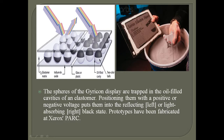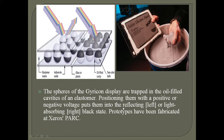In the diagram, we have the elastomer matrix, indium tin oxide, glass or plastic substrate, oil-filled cavities, and two-color black-and-white balls. The spheres of the Gyricon display are trapped in oil-filled cavities of an elastomer. Positioning them with a positive or negative voltage puts them into a reflecting white or light-absorbing black state. Prototypes have been fabricated at Xerox PARC.